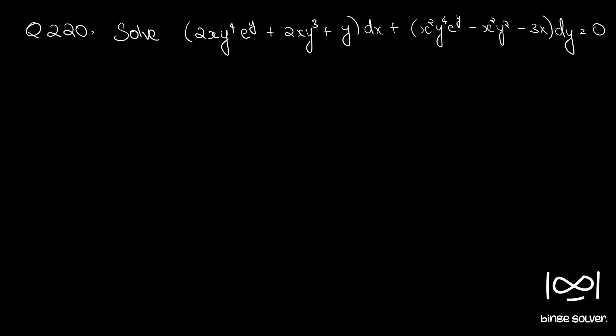Question 220. Solve 2xy⁴eʸ plus 2xy³ plus y dx plus x²y⁴eʸ minus x²y² minus 3x dy equal to 0. The given differential equation is in the form M dx plus N dy equal to 0. We first check whether the given differential equation is exact using the necessary and sufficient condition ∂M/∂y equal to ∂N/∂x.